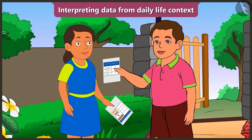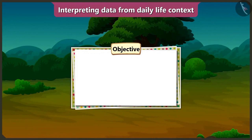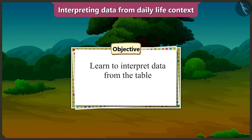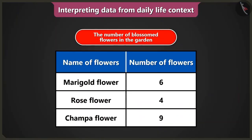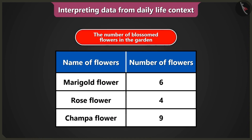How is that? Come on, let me teach you. Today in this video, we will learn to interpret data from the table. Look, there are different flowers in this garden. How many flowers have blossomed? That data has been collected and filled in the table. That's why it has been written on the top of the table: the number of blossomed flowers in the garden.